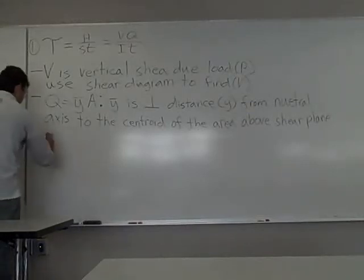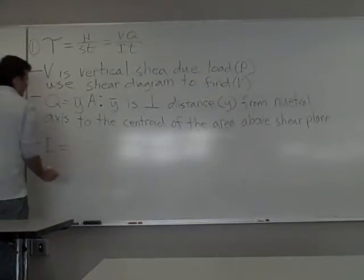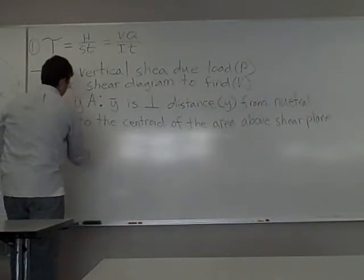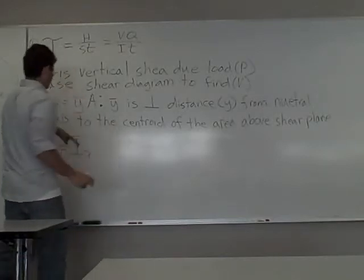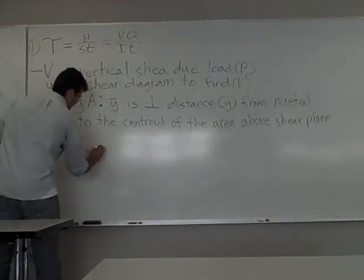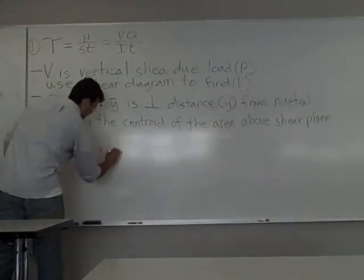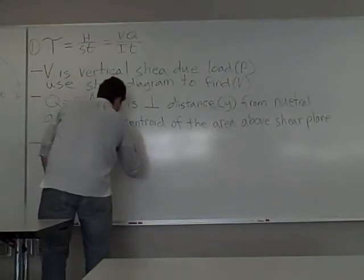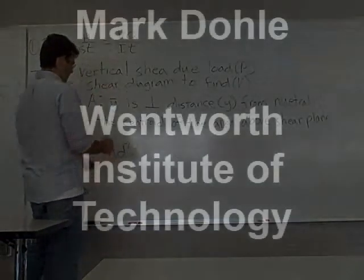And so we have that I, usually it's going to involve a parallel axis theorem. So I like to write that in just so I know what's happening. So I equals the moment of inertia of the shape about its own centroid plus its area times its distance from...